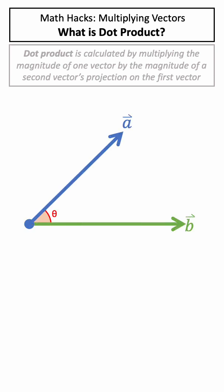So what does this actually mean? Well, let's look at the example here. How do we draw the vector projection of A on B?